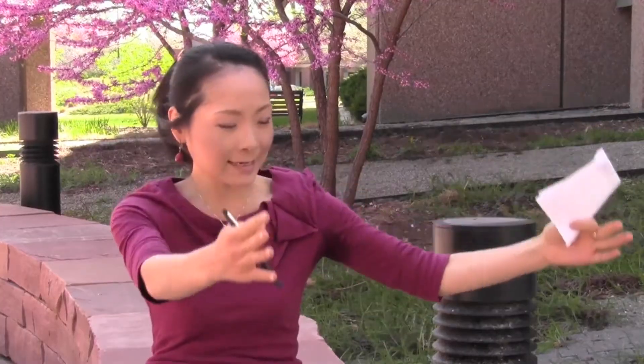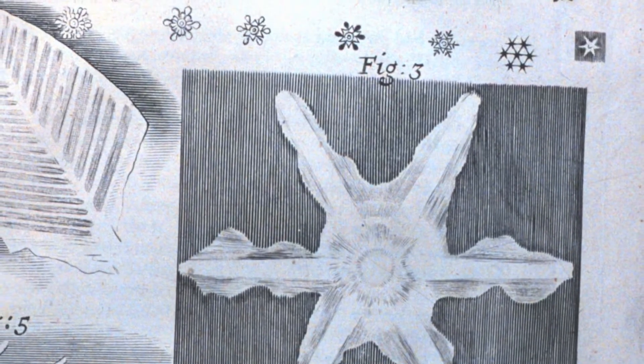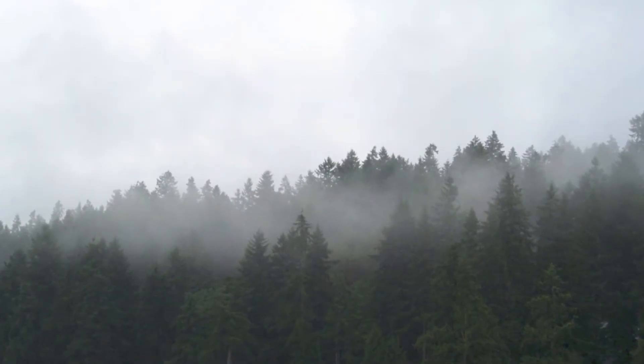One of the instruments is called the two-dimensional video disdrometer. It's about this height, this big, and it sits on the ground. The purpose of it is to collect samples of rain and snow and take pictures at very high frequency, so that you can get a distribution of how many counts of raindrops or snowflakes there were for a given size. You can make that kind of size distribution and also measure rain rate and snow rate. That's the purpose of that instrument.